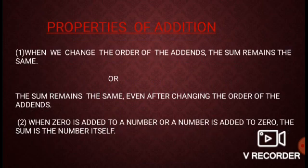Properties of Addition. When we change the order of the addends, the sum remains the same. Or, the sum remains the same even after changing the order of the addends. This means 2 + 3 = 5 and 3 + 2 is also equal to 5.